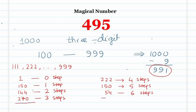54 three-digit numbers require 6 steps to reach 495. If we add all these counts together, the total comes to 991. Hope you enjoyed this video and got some material to think about. Please like and subscribe to the YouTube channel Math1089. Thank you for watching.